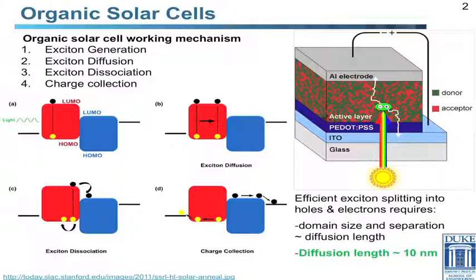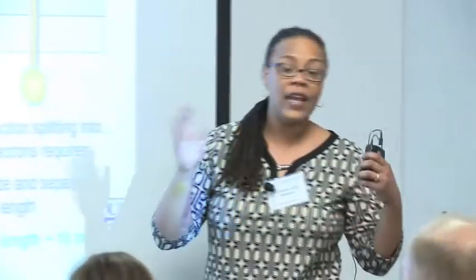The general idea of an organic solar cell is based on a bulk heterojunction, where you have two different materials: a donor and an acceptor. At the interface of these two materials, you can separate an electron-hole pair. You absorb a photon, create an exciton, it travels to the interface between the two materials, they're separated, and you collect the two different charge carriers — electrons and holes — and that's how the solar cell works.